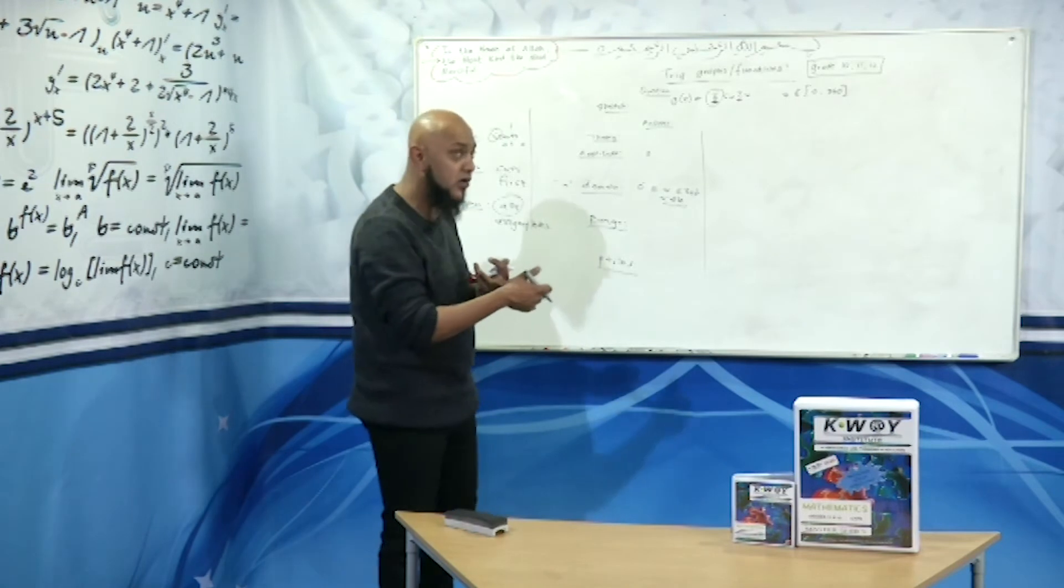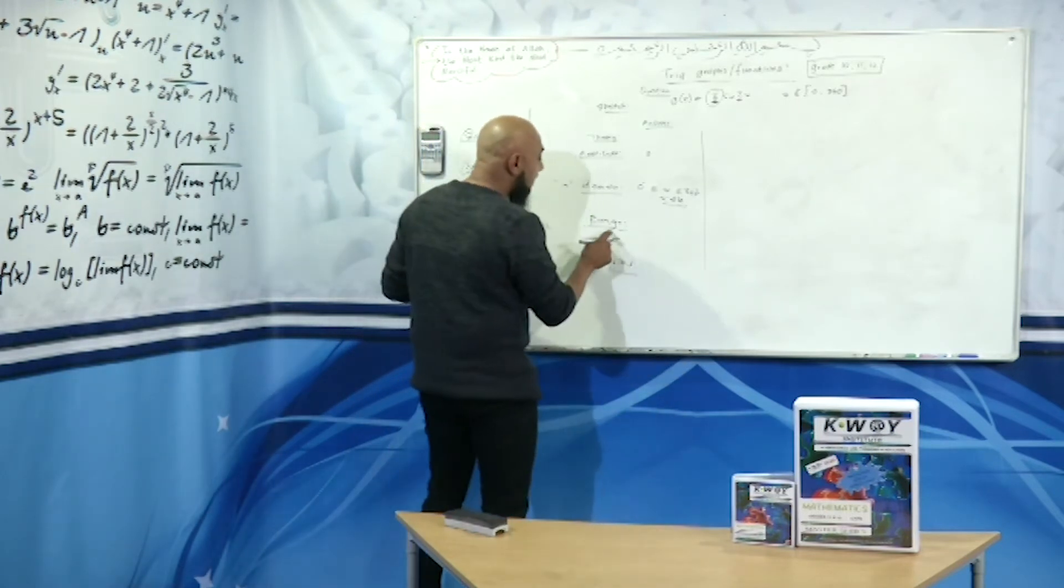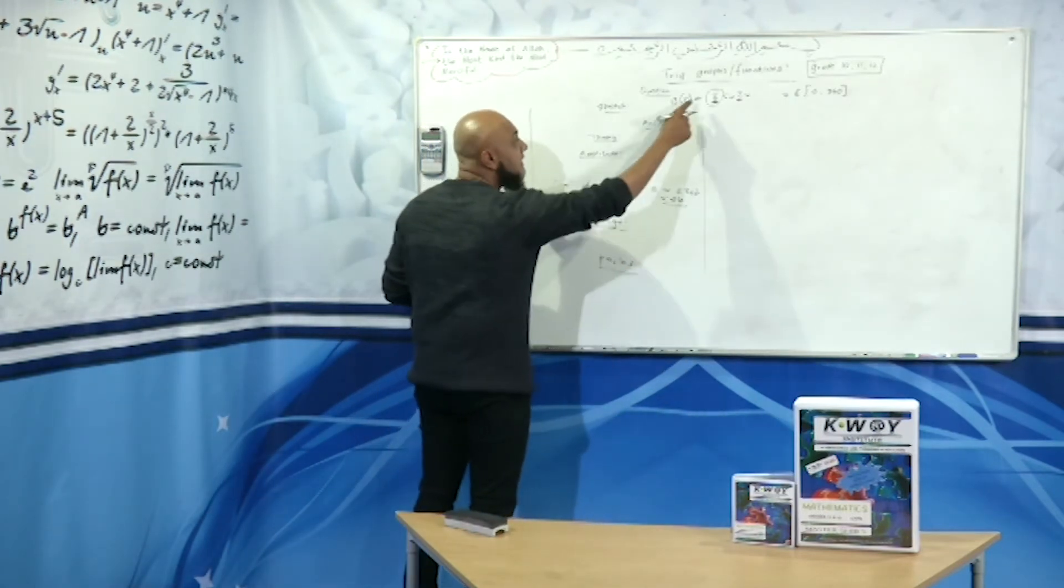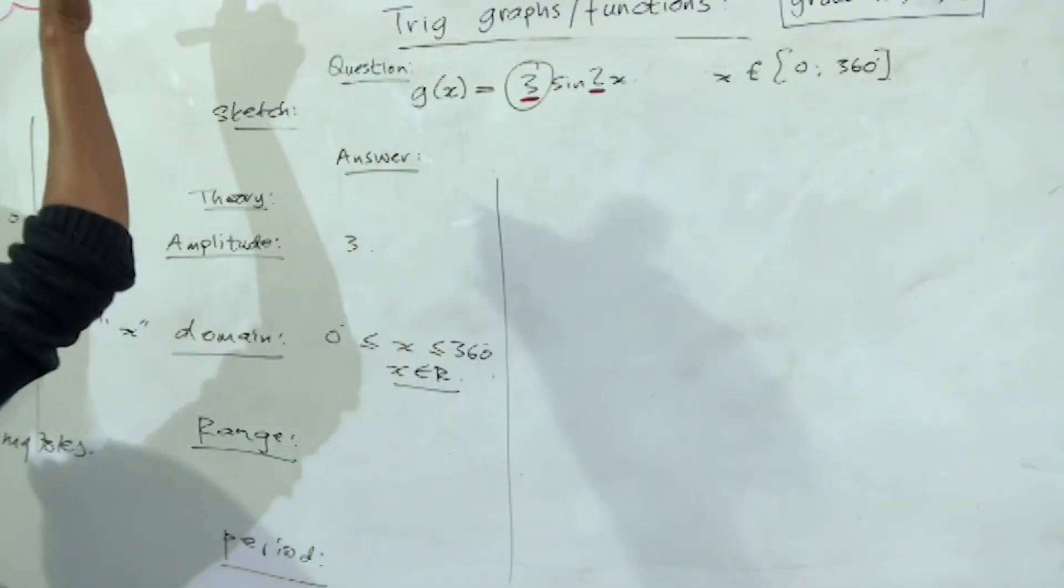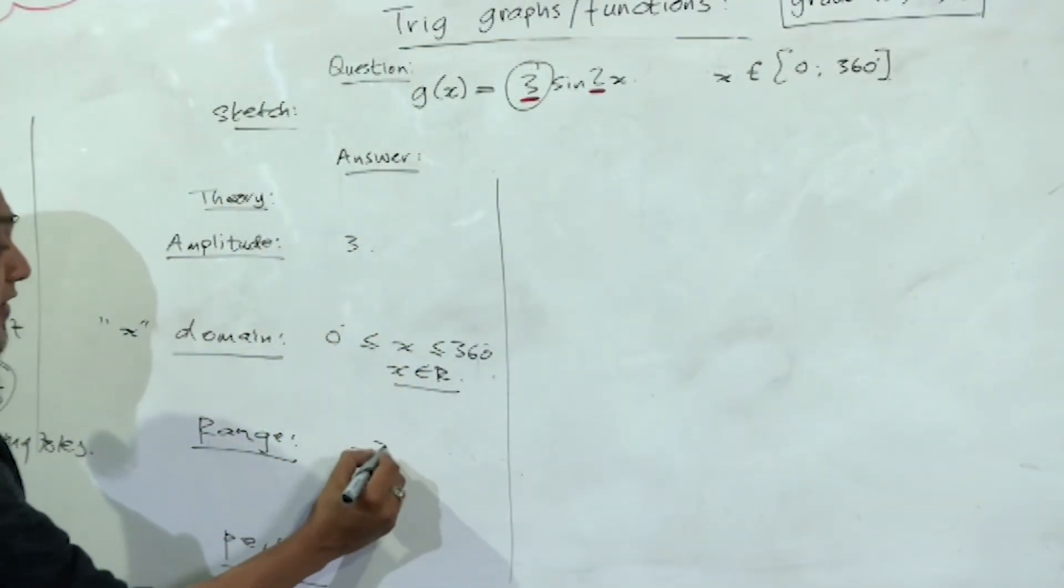Range: lowest to highest. So if the graph is going up to 3, it must go down to minus 3. So it's from minus 3 up to positive 3.